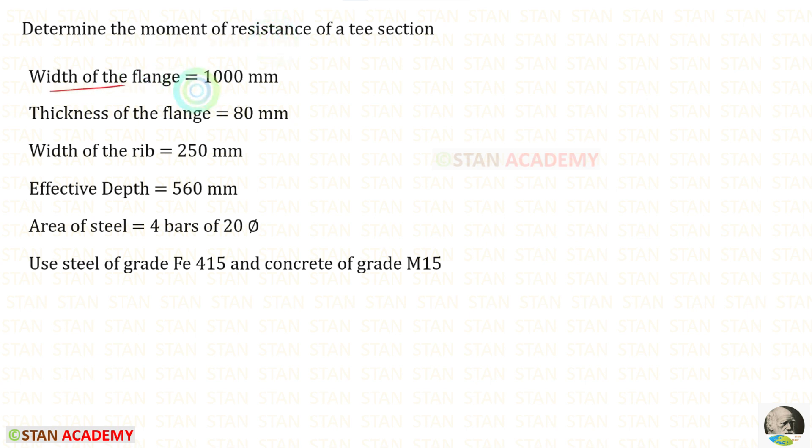Width of the flange is given. Thickness of the flange is given. Width of the rib is given. Effective depth is given. Area of the steel is given. Grade of the steel is given as Fe415 and grade of concrete is given M15. Using this data we can find AST. For that we will get 1256.64 mm².